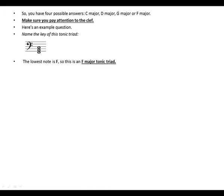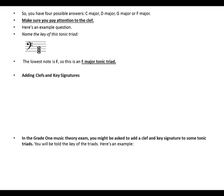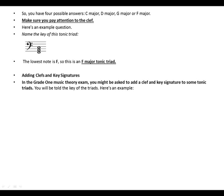Adding clefs and key signatures. In the Grade One music theory exam, you might be asked to add a clef and key signature to some tonic triads. You will be told the key of the triads. Here's an example: G major.